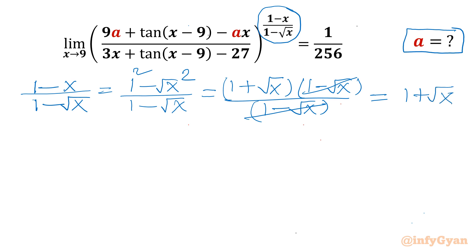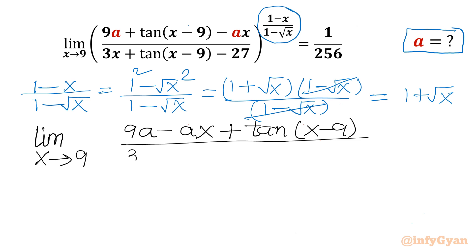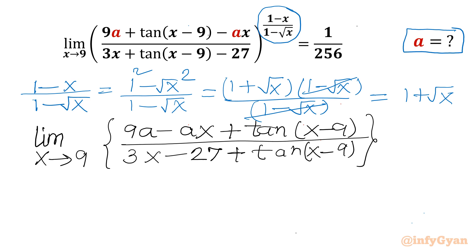Now I will write the limit. So limit x tending to 9: I will write (9a − ax + tan x − 9) divided by (3x − 27 + tan x − 9), and the whole expression is raised to the power (1 + √x). The right-hand side is 1/256.